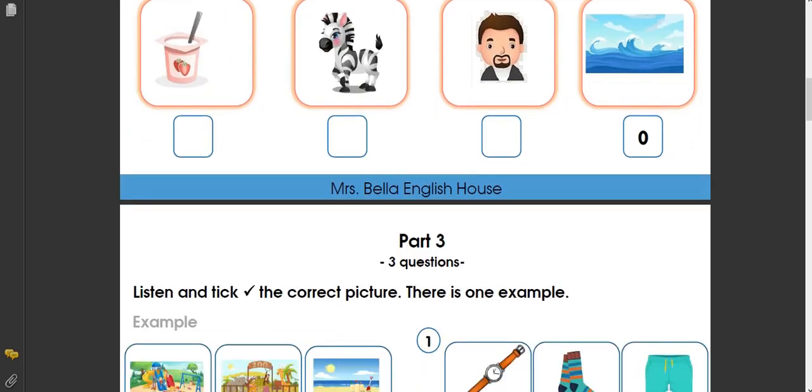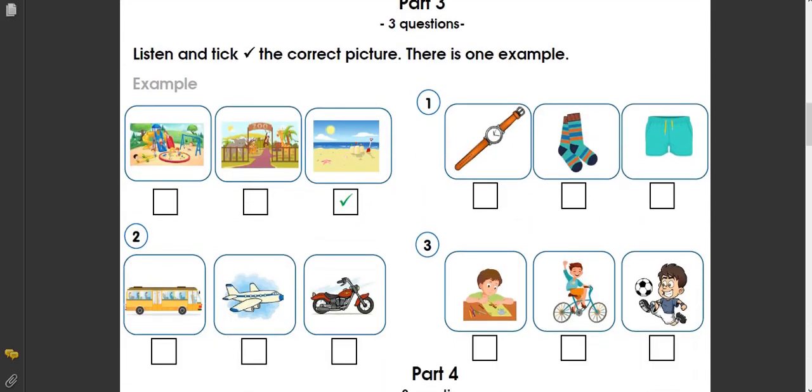Part three. Look at the pictures. Now listen and look. There is one example. I want to go to the beach. Can you see the tick? Now you listen and tick the box.